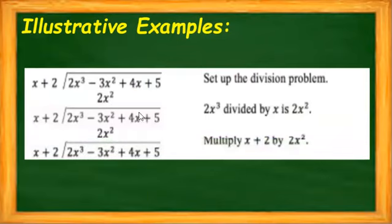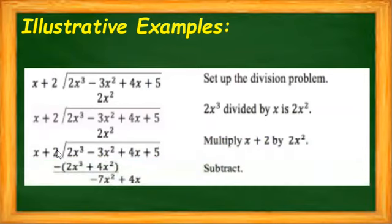Afterwards, we are going to multiply 2x squared by our binomial. So we have 2x squared times x, which gives us 2x cubed. Then 2x squared times 2 will give us 4x squared. Now we subtract our answer. So 2x cubed minus 2x cubed is zero, and then negative 3x squared minus 4x squared.